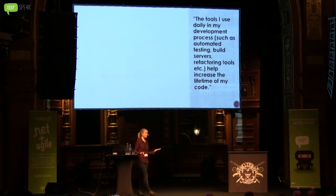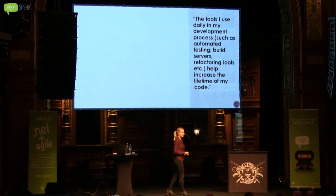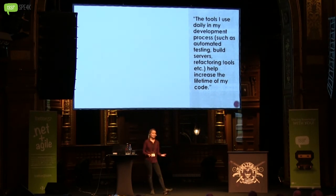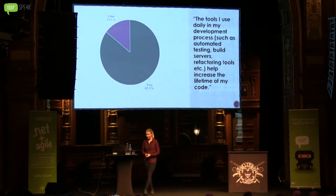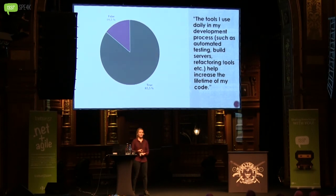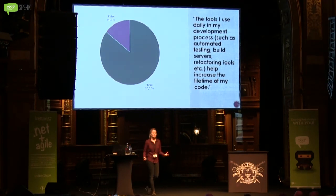So do these tools improve the life expectancy of our code? Do they help our code live longer? I had to ask in my survey. The statement was: 'The tools I use daily in my development process, such as automated testing, build servers, refactoring tools, etc., help increase the lifetime of my code.' 85.5% of developers answered true. According to most developers, our support systems help increase life expectancy, just as the support systems around us as human beings have increased our life expectancy.